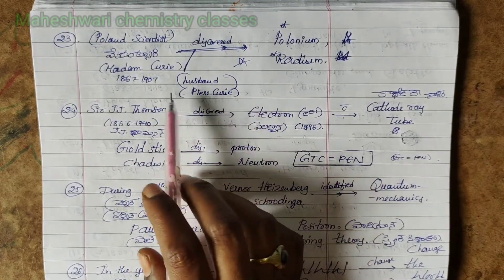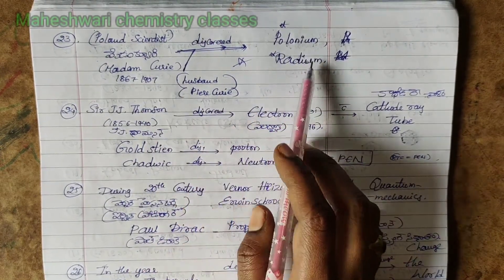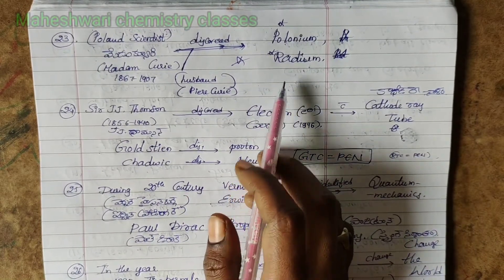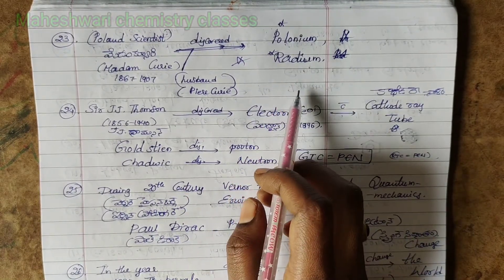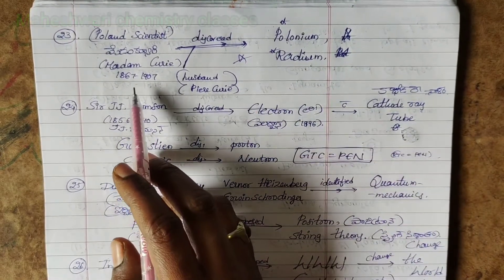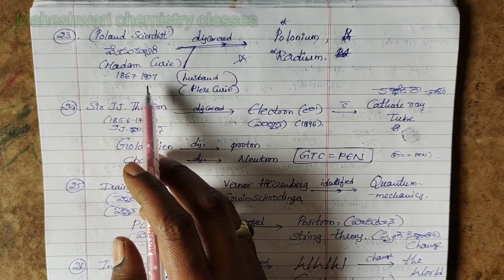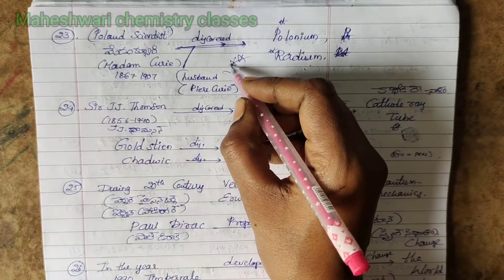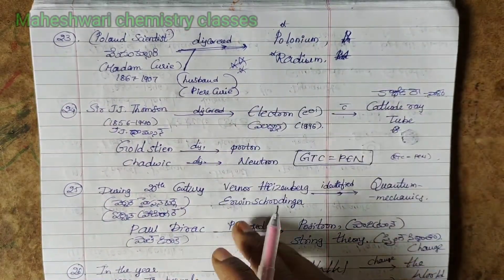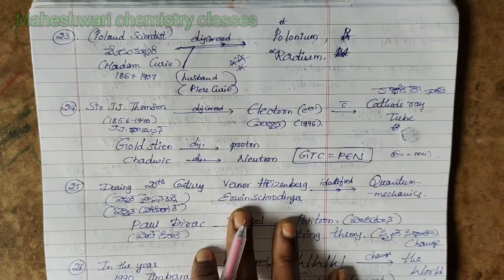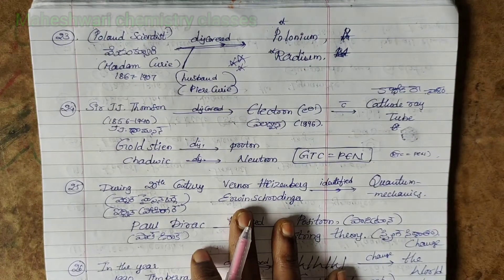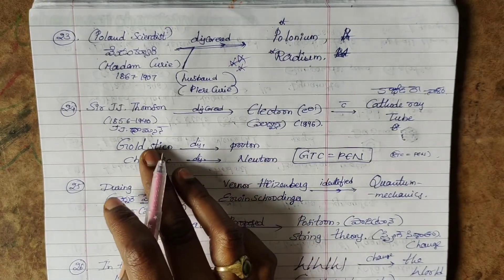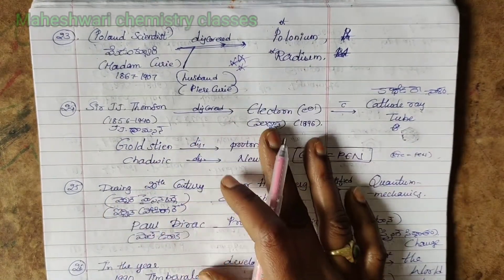Her husband Pierre Curie also worked on polonium and radium. Importantly, Madame Curie received the Nobel Prize two times.